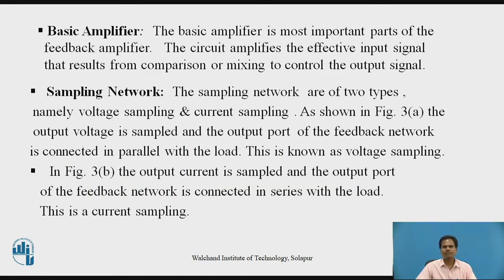The next element is the basic amplifier, which is the most important part of a feedback amplifier. It amplifies the effective input signal — either voltage or current — resulting from the mixing in the mixer network, to control the output signal. The next element is the sampling network, which is of two types similar to the mixer network: voltage sampling and current sampling, depending upon the type of electrical quantity taken from the output of the basic amplifier.